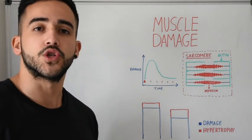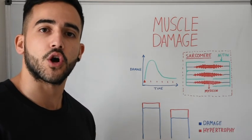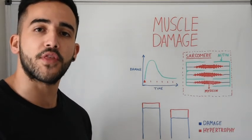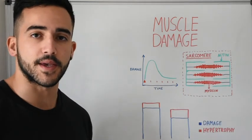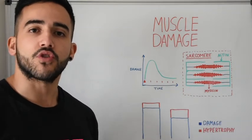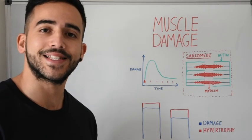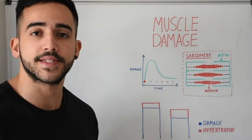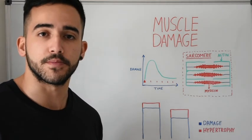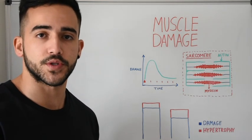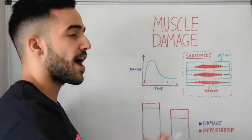Actin filaments are the thin filaments and myosin filaments are the thick filaments, which grab onto the actin and pull them in to cause a contraction. During resistance training we complete concentric and eccentric contractions, both of which have the potential to cause micro-level damage to the sarcomeres. We see much greater damage with eccentric contractions because they lengthen the sarcomeres, which generally leads to DOMS — delayed onset muscle soreness.